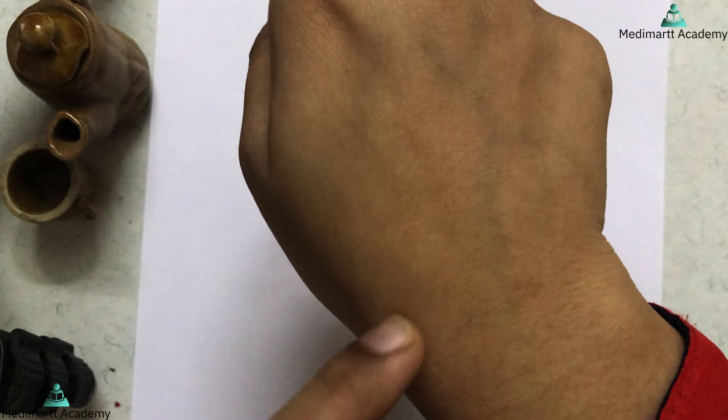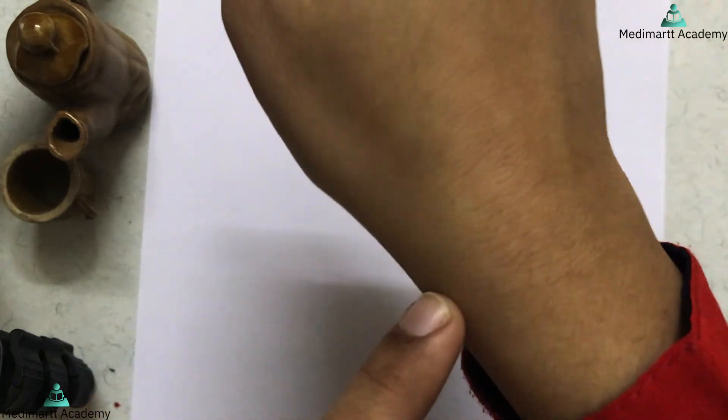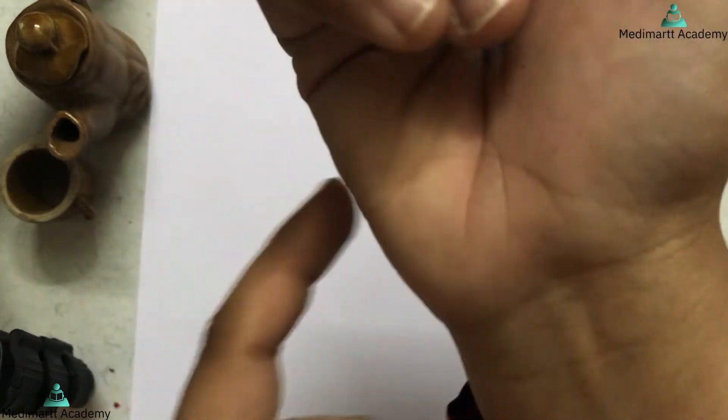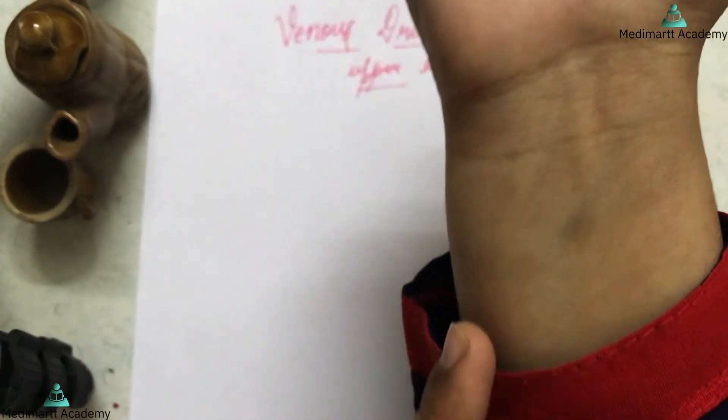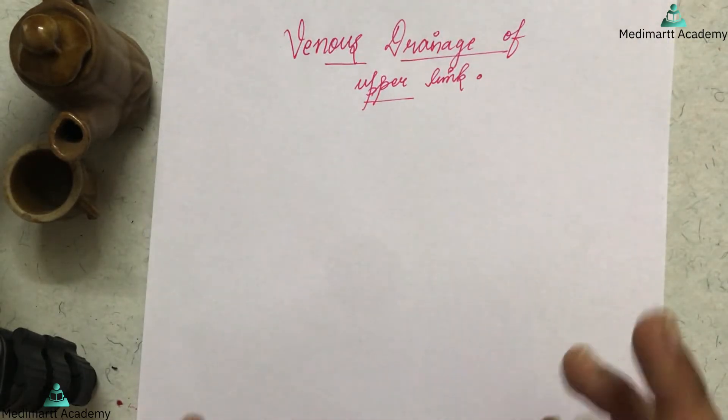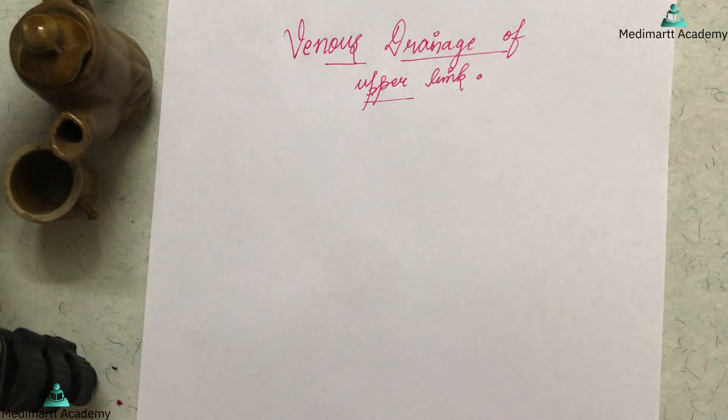From the dorsal venous arch medially, one vein extends that will form the cephalic vein, and from the lateral part, a vein extends which will form the basilic vein. There are three main veins in the venous drainage of the upper limb: the cephalic vein which is present laterally, the basilic vein which is present medially, and the median cubital vein or anti-cubital vein. These veins finally drain into the axillary vein.